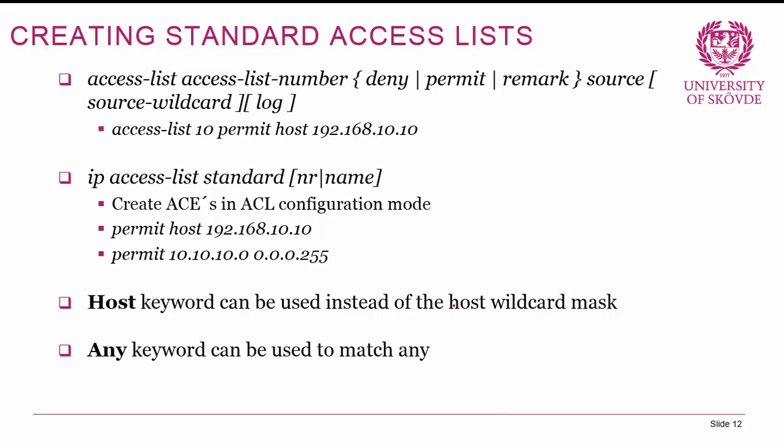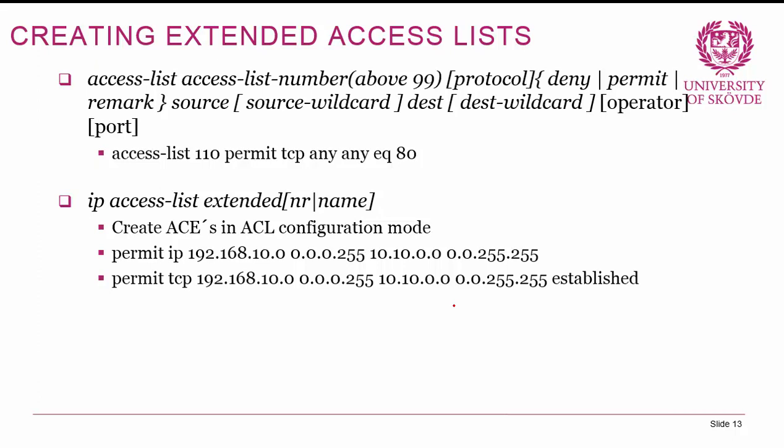Creating extended ACLs is similar. Using the first method, we use 'access-list' with a number above 99 (1–99 is for standard, above 99 is for extended), then specify the protocol, source, destination, and optionally an operator and port number. For example: 'access-list 110 permit tcp any any eq 80'. Alternatively, use 'ip access-list extended' with a number or name to enter ACL config mode and input statements like 'permit ip [source] [destination]' with port numbers.